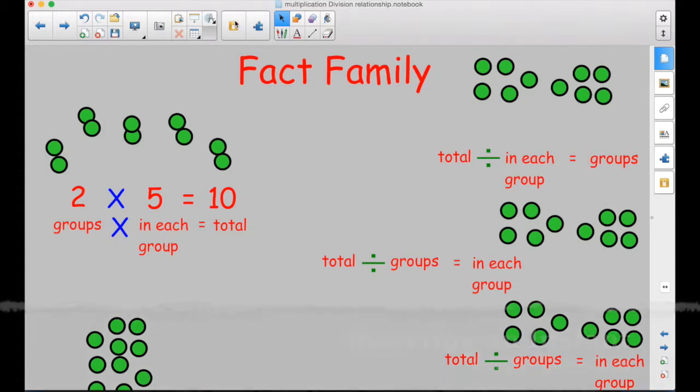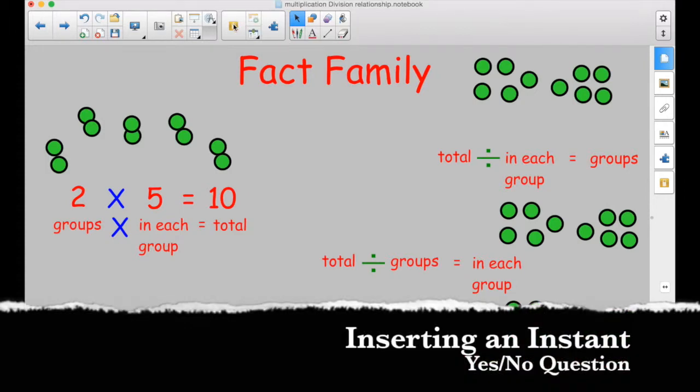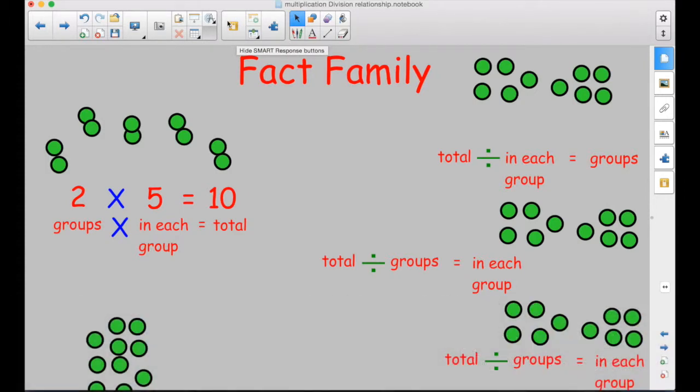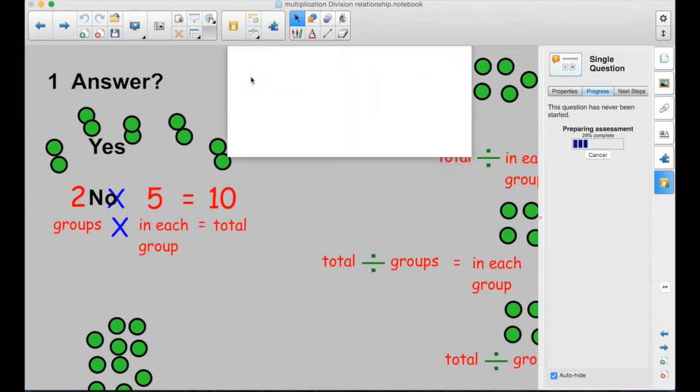Then I'm going to come here to the Smart Response button. Then here, I have insert question. That one lets me put in a question with the correct answer. I don't want that. I just want an instant yes, no. Is this student correct? Yes or no? So I've given them time to discuss it. They've got their clicker, their Chromebook, iPad, whatever. And then I start an instant yes or no question.